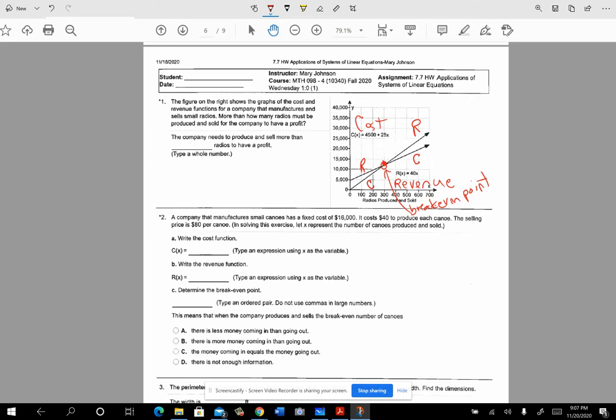After that point you're going to start making a profit. The revenue after that point is bigger than the cost, where before that point the cost is greater than the revenue, so you're losing money until you get to here. This right here is called the break-even point.